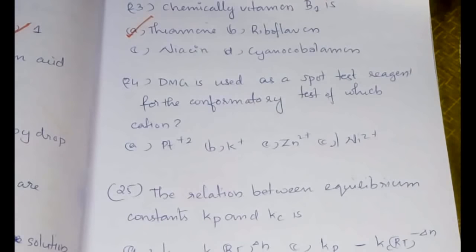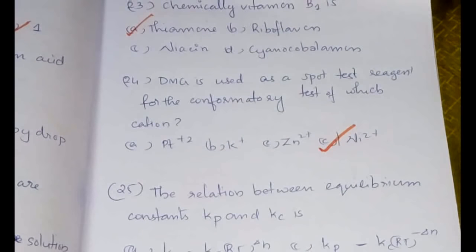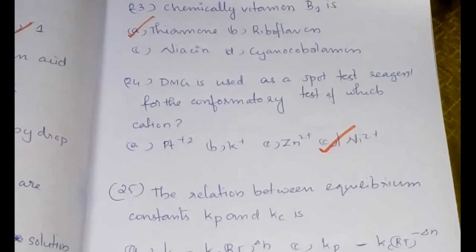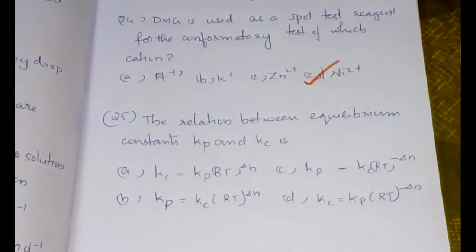The next question: DMG is used as a spot test reagent for the confirmatory test of which cation? It should be nickel, because whenever you hear dimethylglyoxime, the complexing between dimethylglyoxime and nickel should come in your mind. Therefore, DMG is used as a spot test reagent for the confirmatory test of Ni2+.